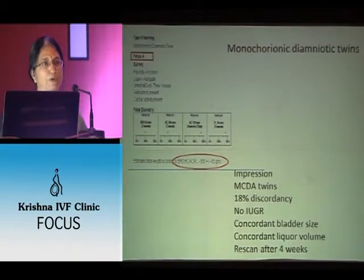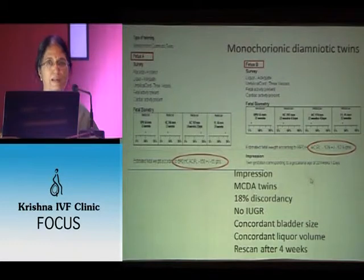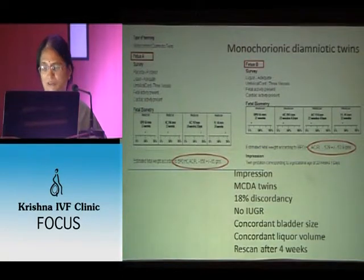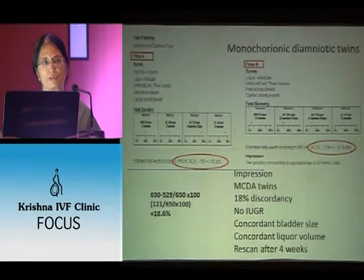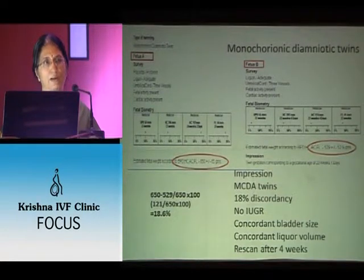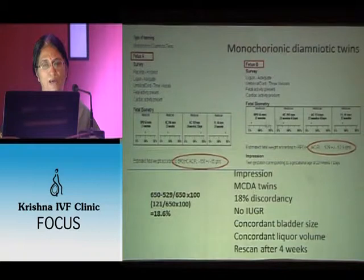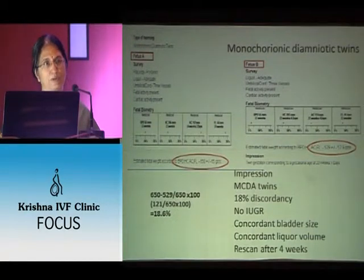Here is an example of monochorionic diamniotic twins. Twin A weighs 650 grams, twin B weighs 529 grams. The discordance percentage is: 650 minus 529 equals 121, divided by 650 — that is 18.6%. This is mild discordancy. For monochorionic twins you also need to see the bladder volume and liquor volume. The impression would be: monochorionic diamniotic twins with 18% discordancy, no IUGR in either twin. Though there is discordancy, growth is good, bladder size concordant, liquor volume concordant. Rescan after 4 weeks — this is a low-risk monochorionic pregnancy.